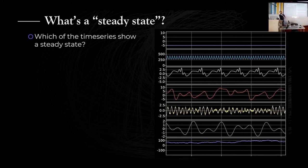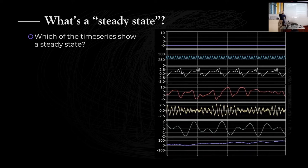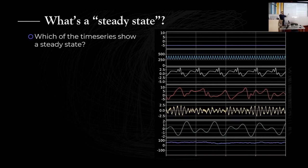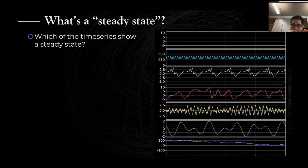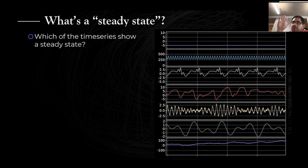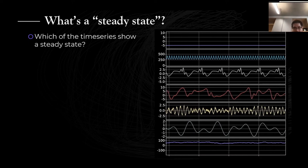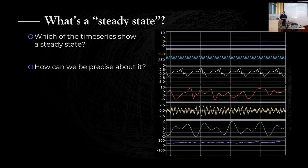If you think six or more are steady state — like big money — raise your hand now. We have at least one 'six or more.' The point of this mental gymnastics is to say that this is not really an easy thing to say, because there is always some ambiguity about what a steady state is. And the question is, how can you be precise about it?